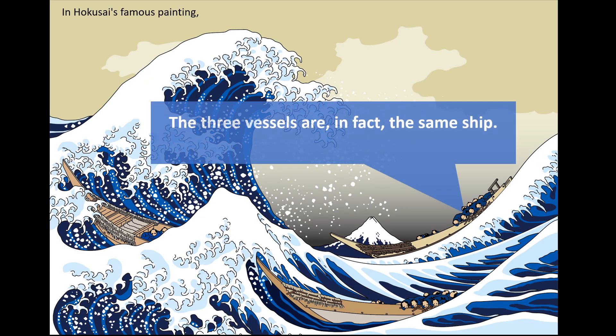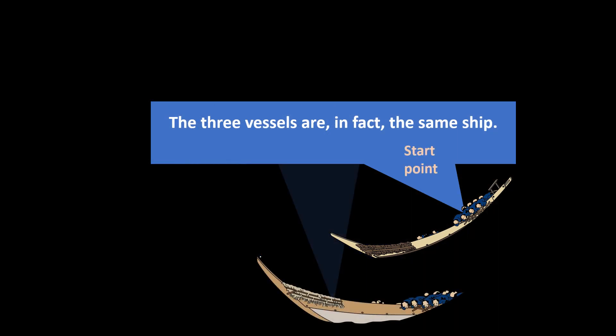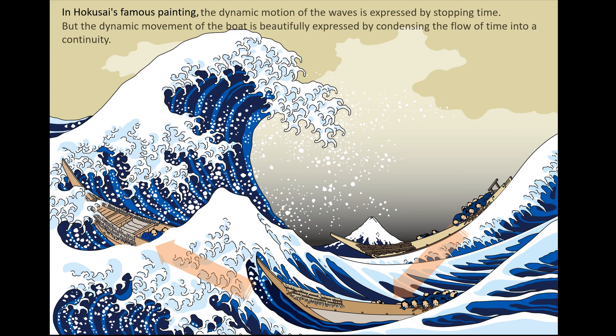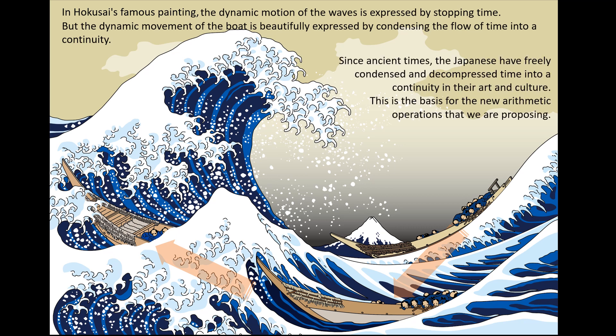In Coxai's famous painting, the three vessels are in fact the same shape: start point, middle point, end point. Since ancient times, the Japanese have really condensed the decompress time into a continuity in their art and culture. This is the basis for the new art decorations that we are proposing.